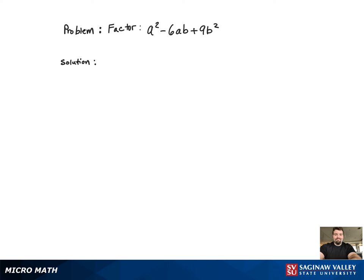For this factoring problem, we will begin by multiplying the binomials with each other. We know the signs are both negative. Now all we need to do is figure out what the coefficients of the b term are in those binomials.